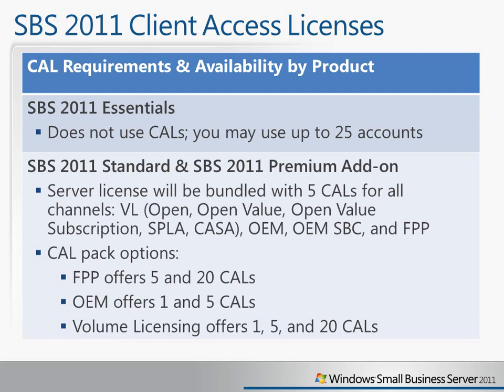For Standard and the Premium Add-on, this follows the CAL model that you may be more familiar with, with Windows Server itself and previous editions of SBS. The server license will be bundled with five CALs through all the channels, whether that's Volume Licensing, OEM, OEM System Builder, and also FPP, or the Retail Channel.